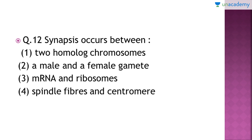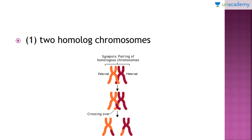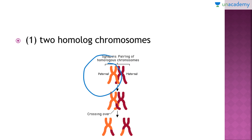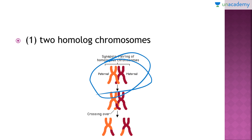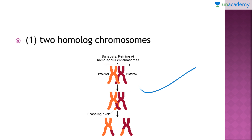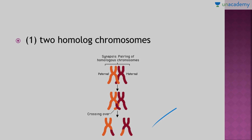Question number 12: 'Synapsis occurs between which of the following?' Synapsis is the pairing of two homologous chromosomes, so the right answer is option number 1. Homologous chromosomes are two chromosomes with the same DNA sequence — one from the maternal side and one from the paternal side. When these chromosomes pair up, they form a structure called synapsis, where exchange of chromosomal material takes place.